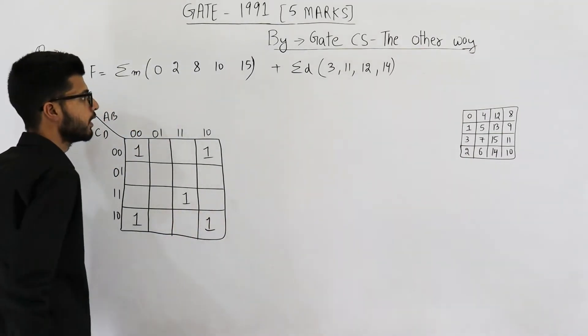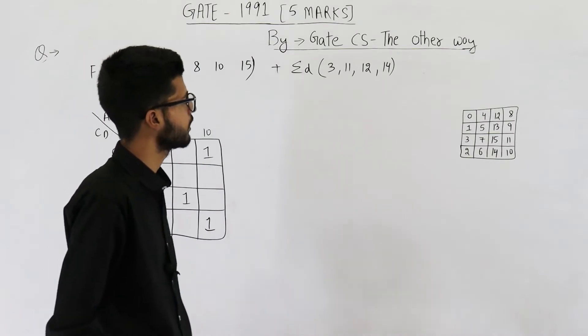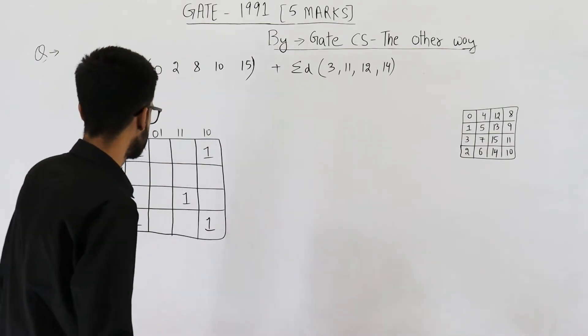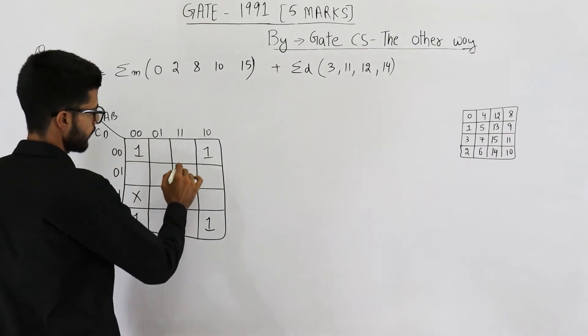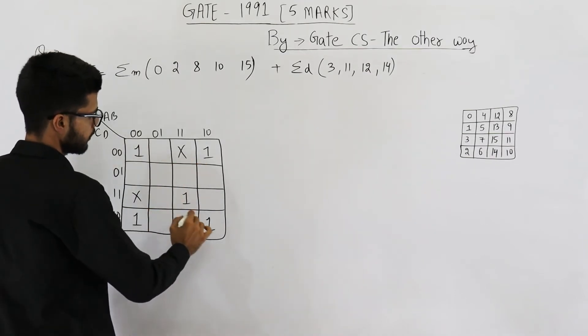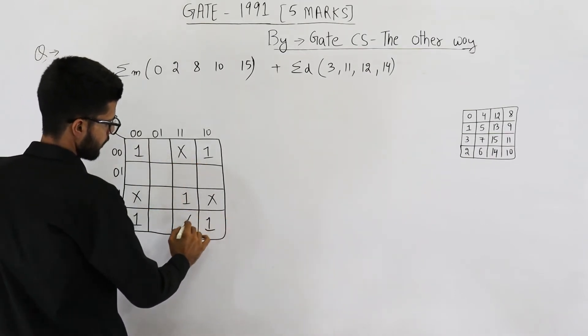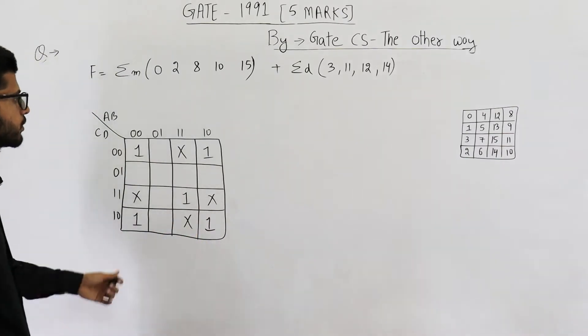And the don't cares are 3, 11, 12 and 14. So 3, 12, 11 and 14. This will be the K-map.